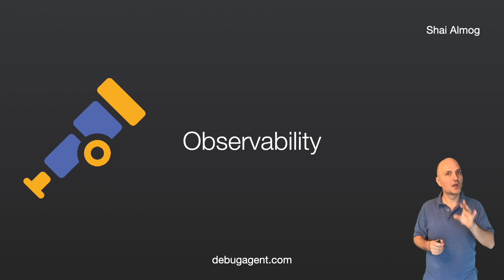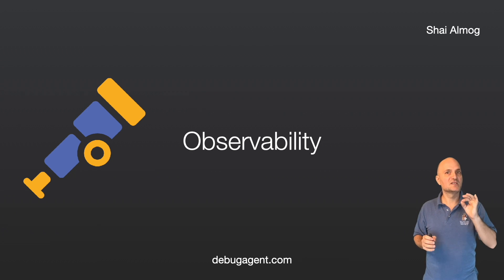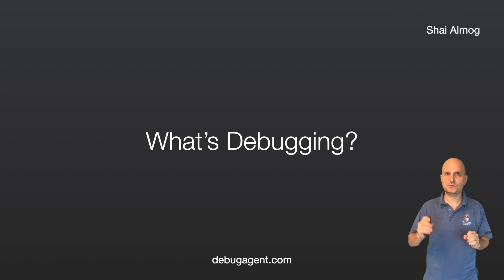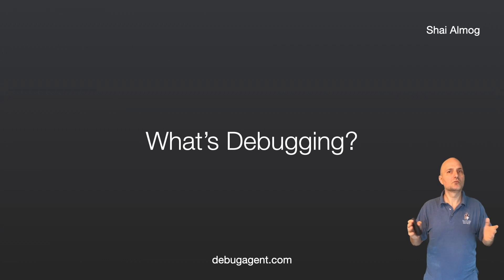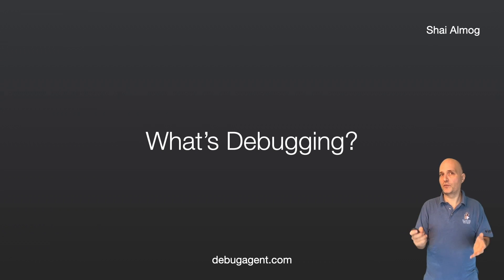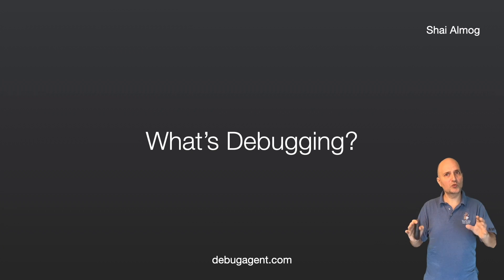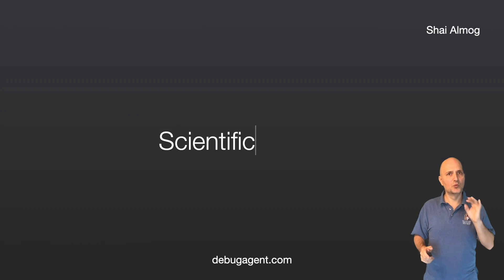Observability isn't debugging per se, but it's an important tool when tracking production issues in all these technologies. Before we go on to the main course, let's dig a bit deeper into what's debugging. This should be obvious to most of us, and it is — but there are also a couple of nuances.